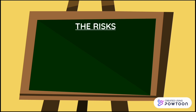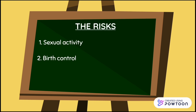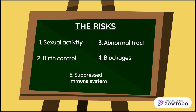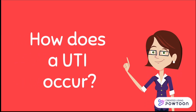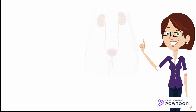Other risk factors include sexual activity, types of birth control such as diaphragm or spermicidal agents, abnormalities or blockages in the urinary tract, or simply a suppressed immune system. Now let's dive further into how a UTI occurs.